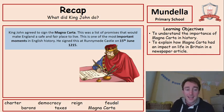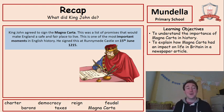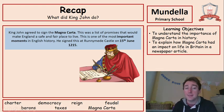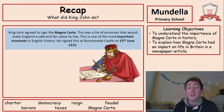Let's recap. What did King John do? Remember he was under all of that pressure from the barons, the French, and the church. He'd annoyed everybody. So what did he do? He agreed to sign the Magna Carta, and this was a list of promises that would make England a safe and fair place to live for the people. It's one of the most important moments in history. He signed the Magna Carta on the 15th of June 1215.